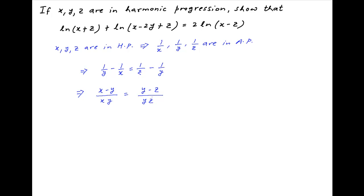y cancels in the denominator on both sides. Now cross-multiplying, we get xz - yz = xy - xz.